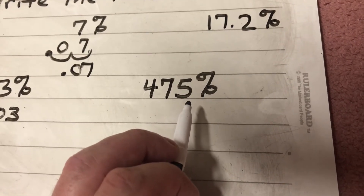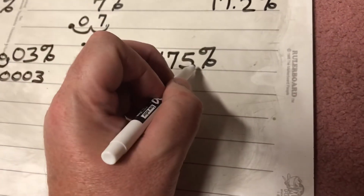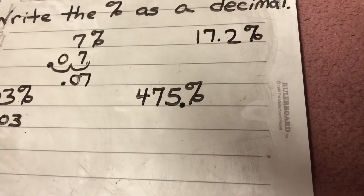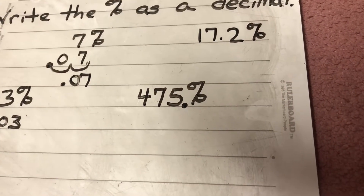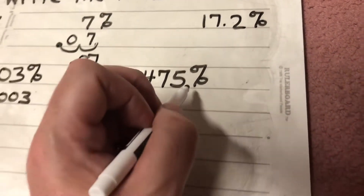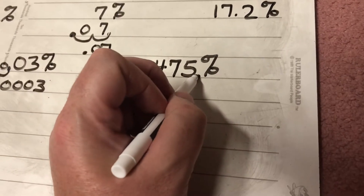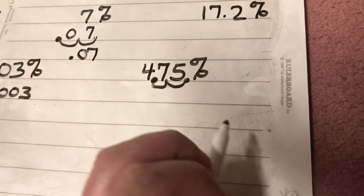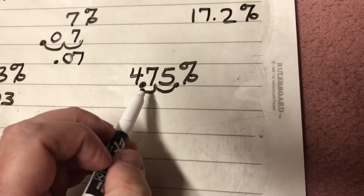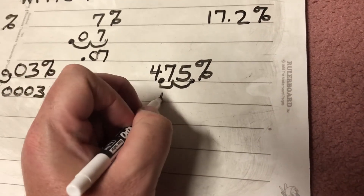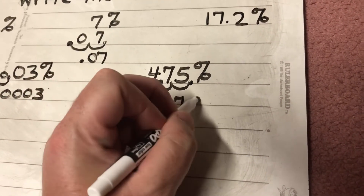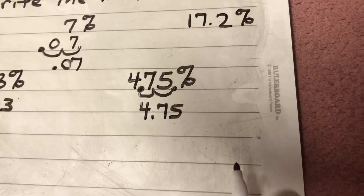475 percent. If I envision a decimal, it's going to go right there at the end. I'm dividing by 100, so I'm going to move that decimal twice to the left. My decimal is now between the four and the seven, giving me 4.75 — four and seventy-five hundredths.